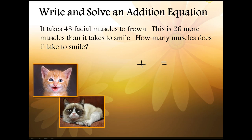It takes 43 muscles to frown. This is the largest value. That's the total number of muscles. This is 26 more than it takes to smile. So we have a smile plus 26 muscles to equal a frown. Now that we have our equation established we can solve.